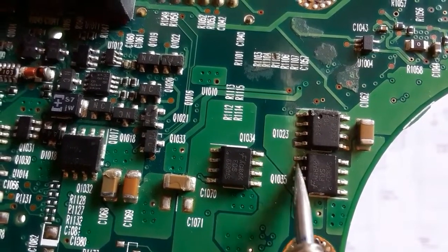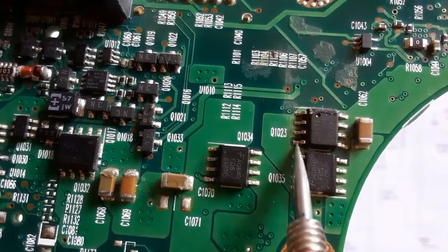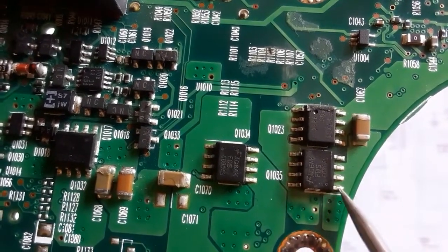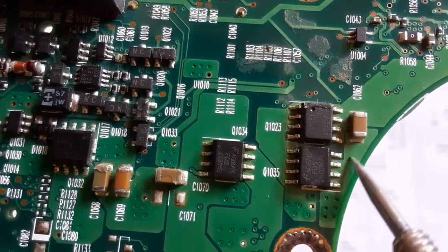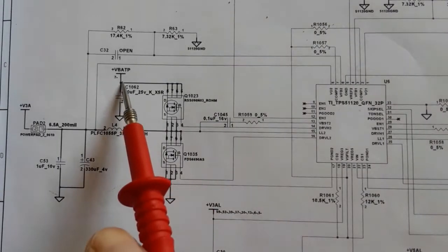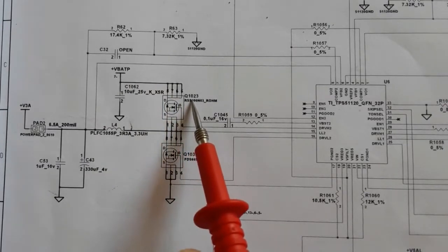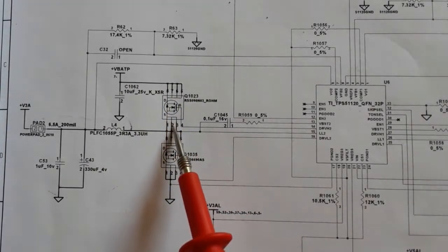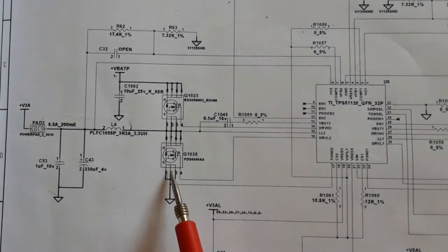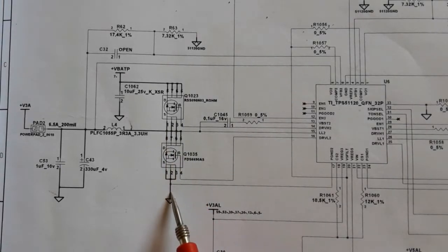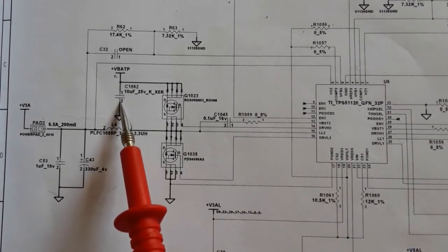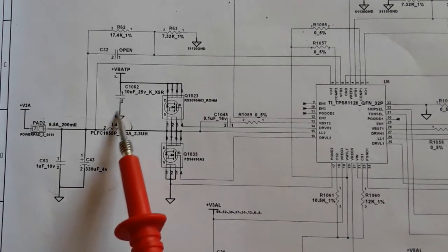The source of the first MOSFET is connected to the drain of the second MOSFET. The source of the second MOSFET is connected to ground. The other side of the electrolytic capacitor is also connected to ground. The ceramic capacitor is likewise connected to ground on the second MOSFET.